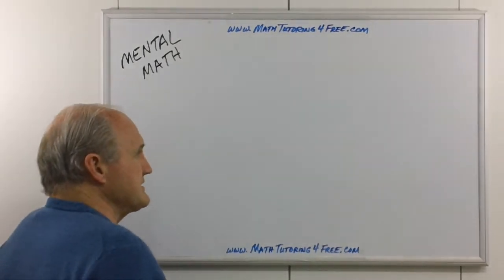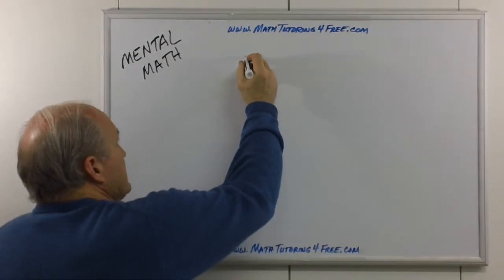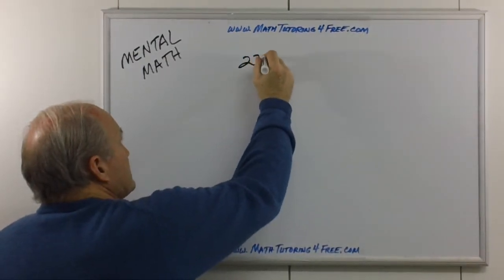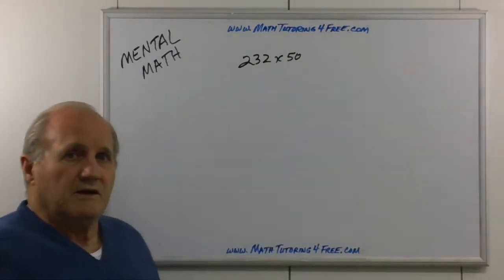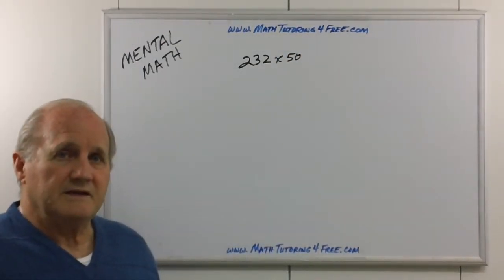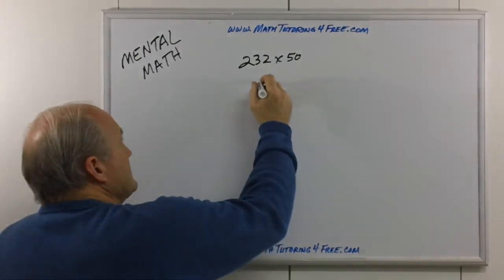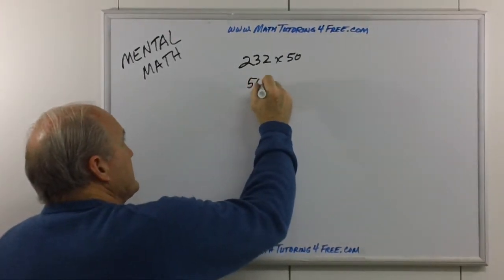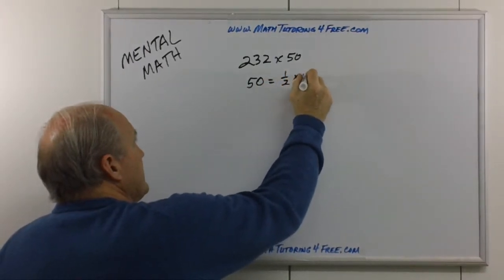One of the cases, for instance, is let's say we want to multiply something. Let's say we have 232 and we want to multiply it by 50. One of the easy ways to do anything multiplying by 50 is to recognize that 50 is equal to one half of 100.